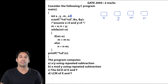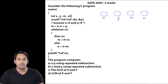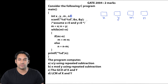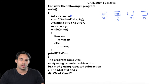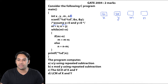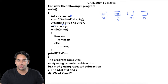Now they are taking the values of x and y from the user and they are saying that assume that the value of x is greater than 0 and the value of y is greater than 0. So let us take some values: let us assume the value of x is 40 and the value of y is 32. Now they are copying the value of x to m and the value of y to n. So m is now going to store 40 and n is now going to store 32.